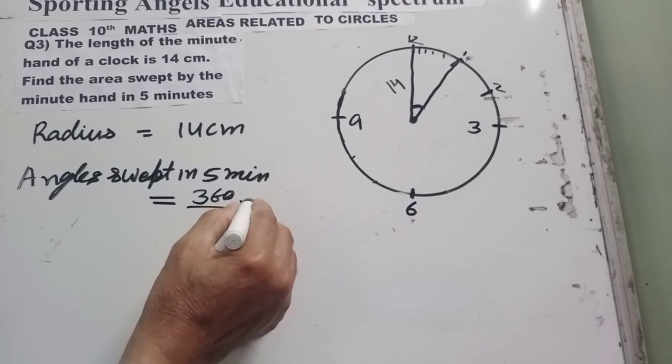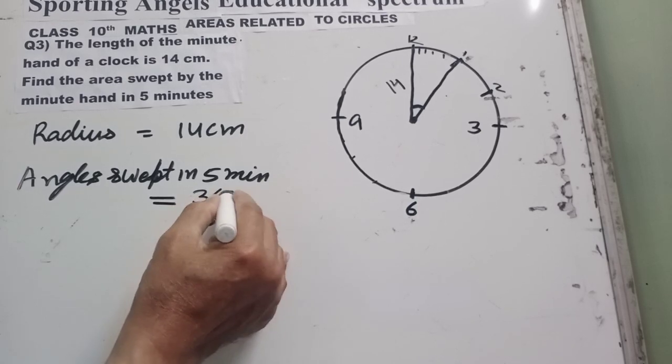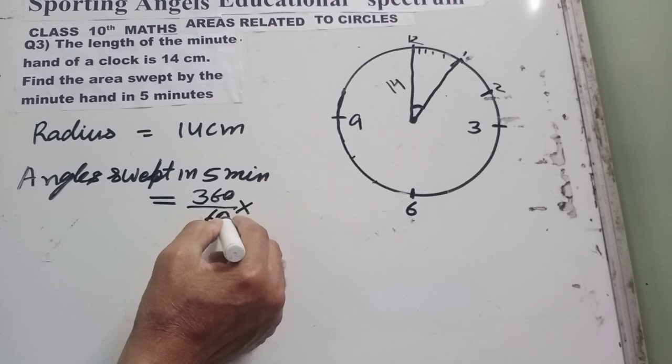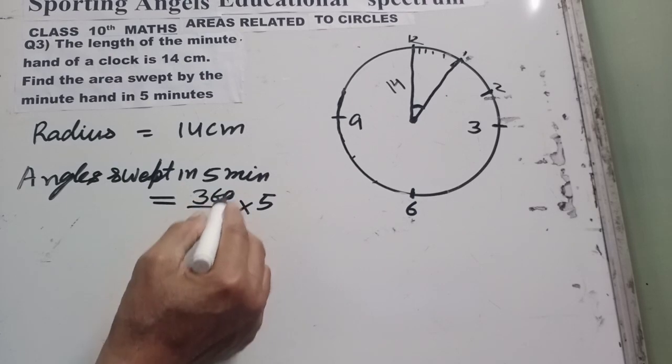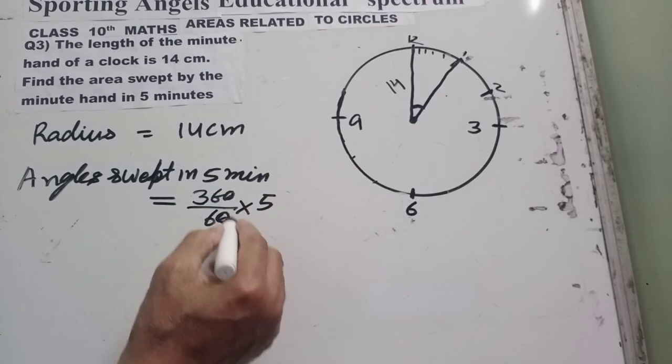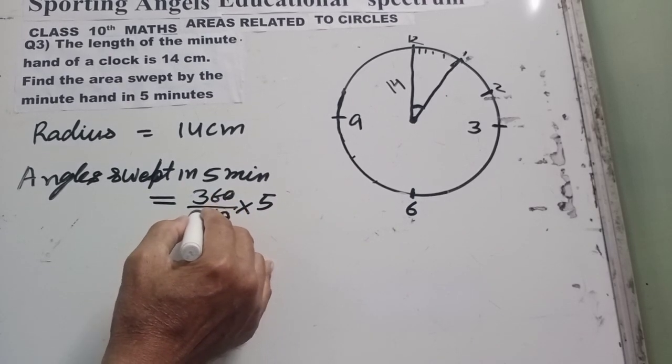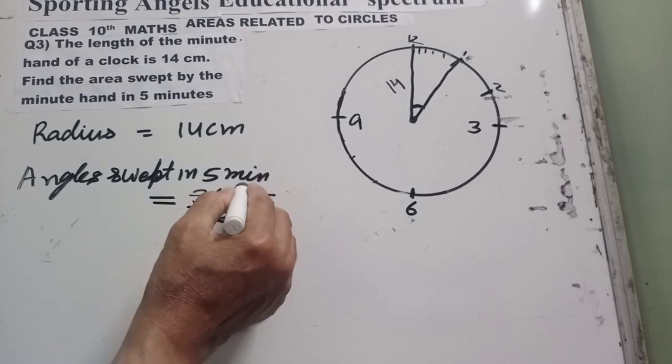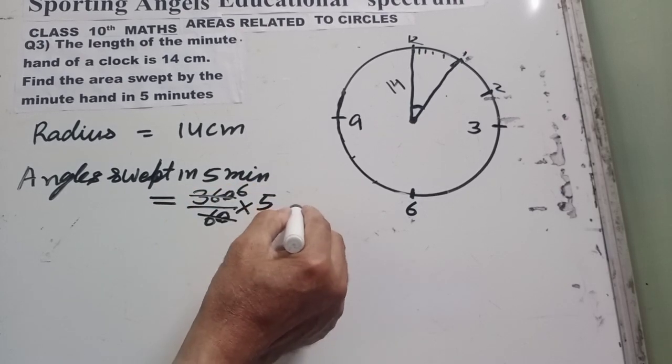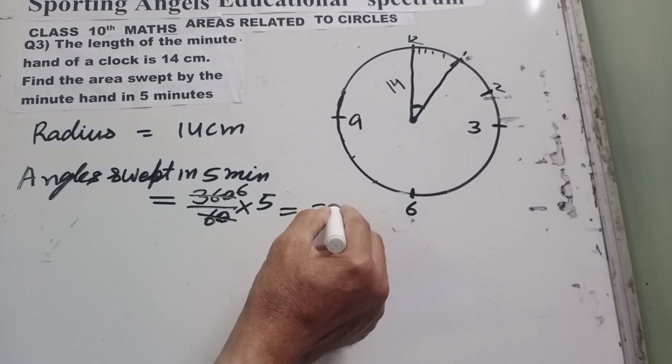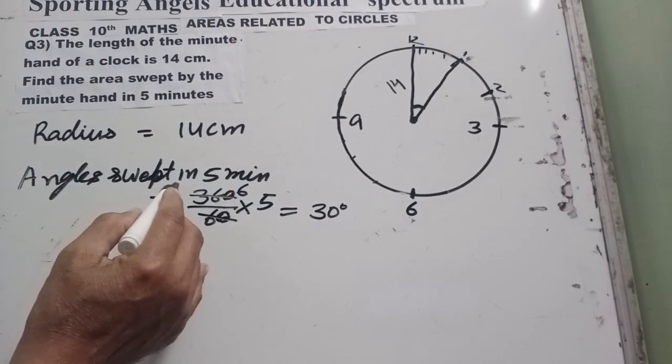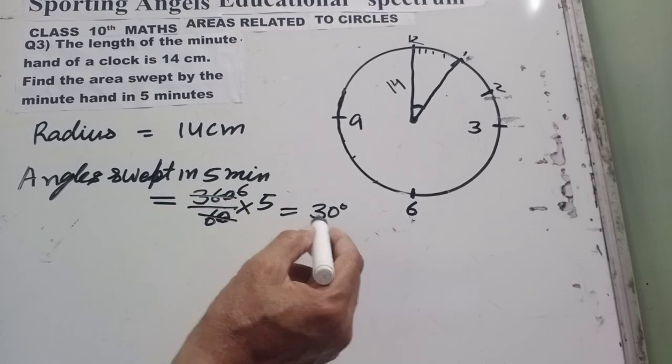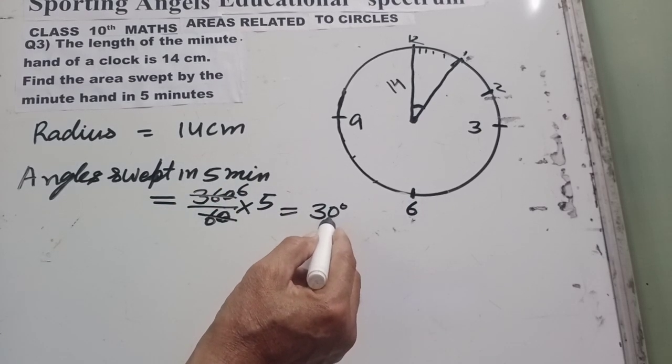So for 1 minute, it will cover 360 upon 60, and for 5 minutes it will cover 360 upon 60 into 5. This will give us 6, 5s are 30 degree. So the angle swept by the minute hand in 5 minutes is 30 degree. Now you can find out the area of the sector.